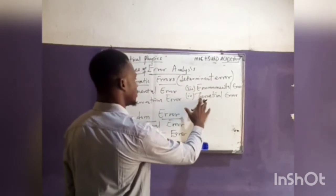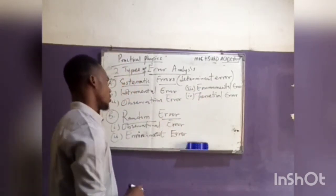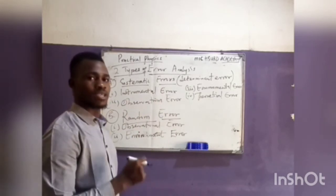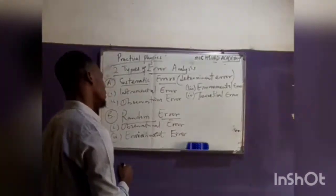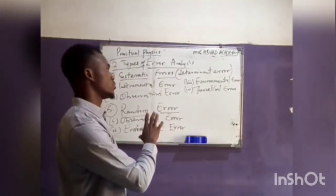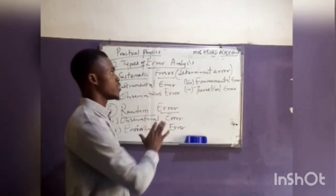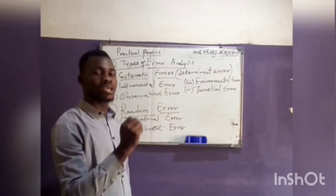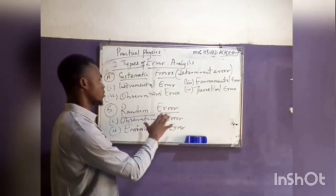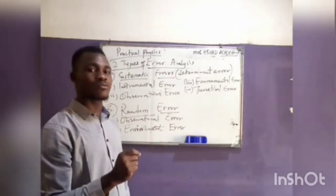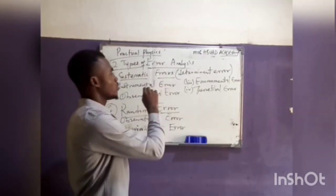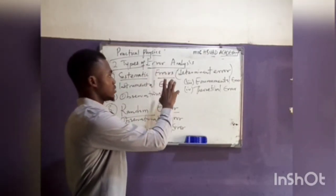For the instrumental error, it may be due to the poor calibration of the instrument, which can lead to this kind of error. Now the key difference between systematic and random errors is: for systematic errors, we can easily identify them and make corrections. For random errors, they are not easily identified.